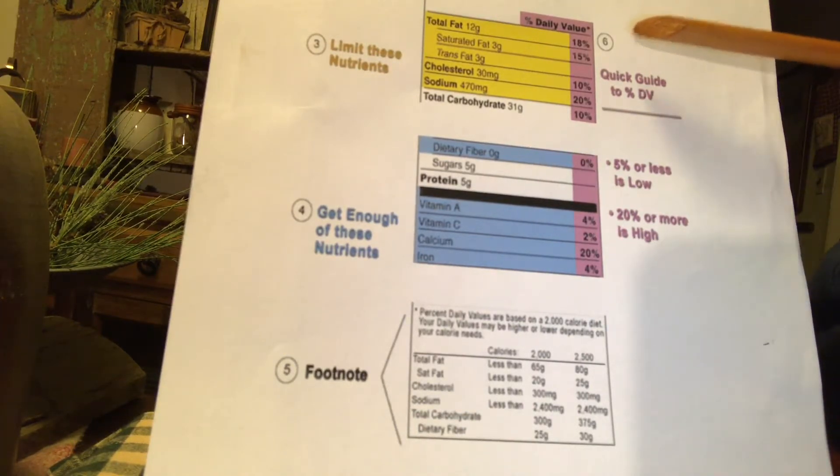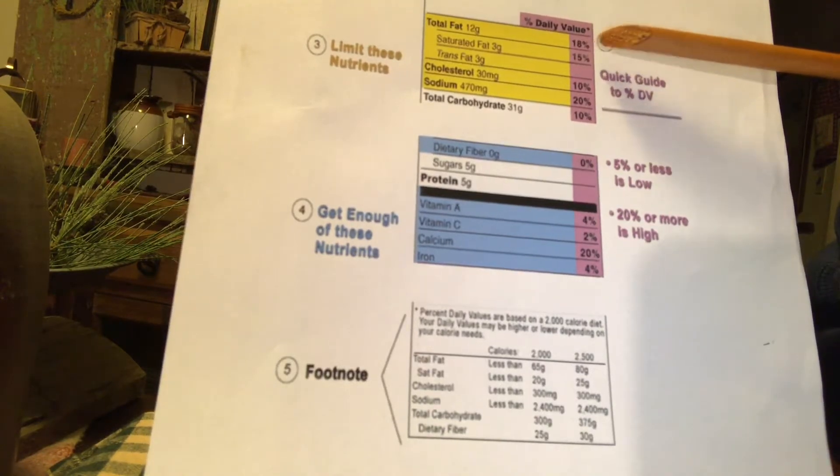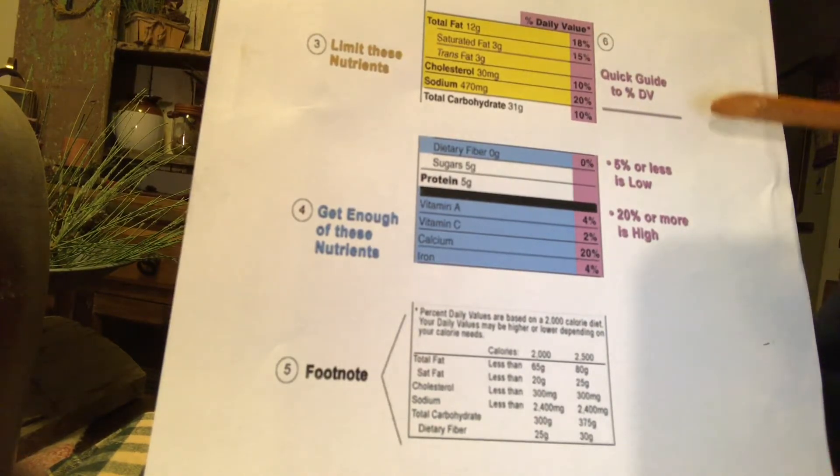If, however, you ate the whole box, that 18% turns into 36%. So, when you compare it to this guideline of 20% or more, it's a very high fatty product. Notice how the serving sizes are making the difference.